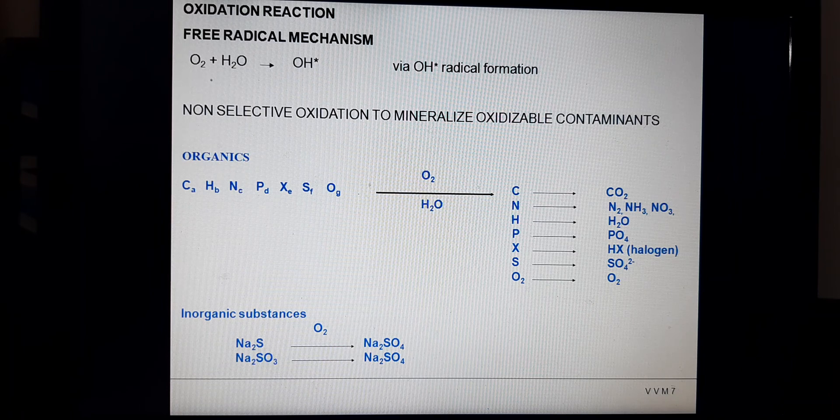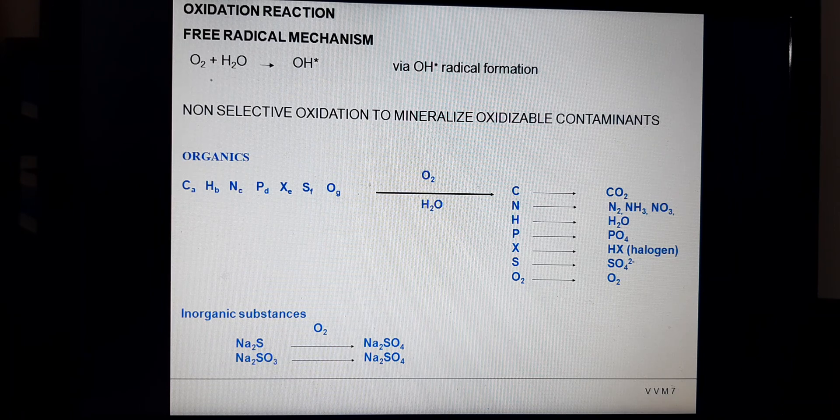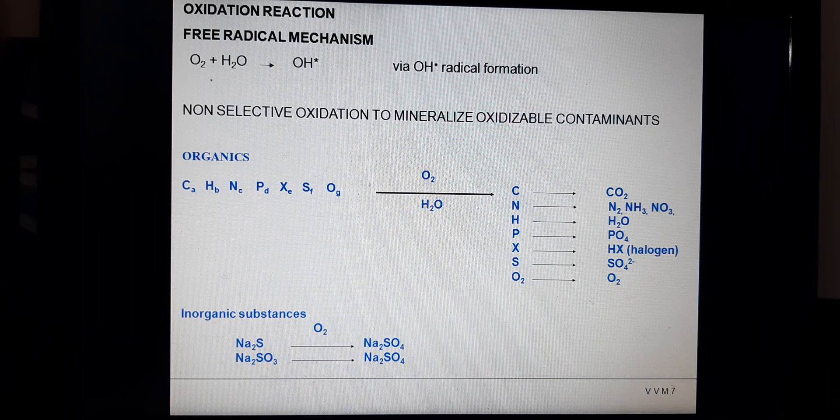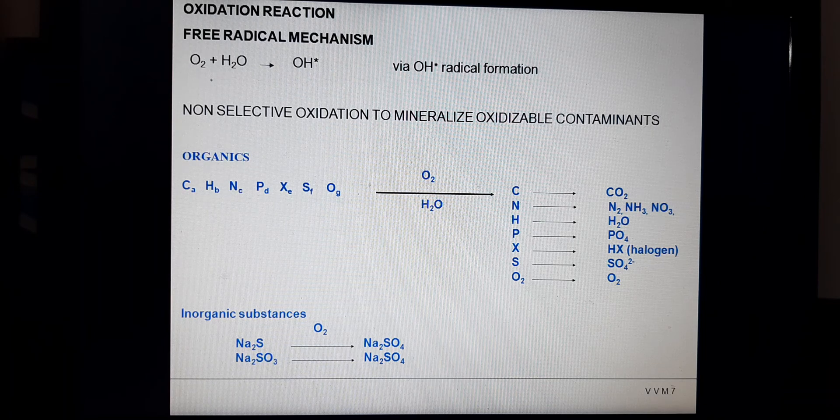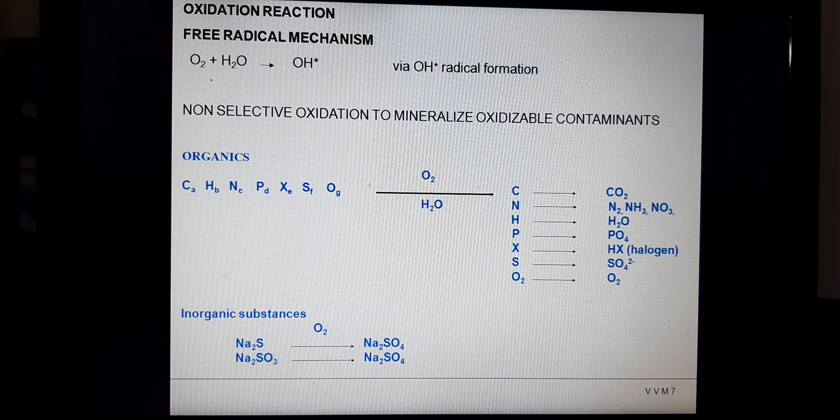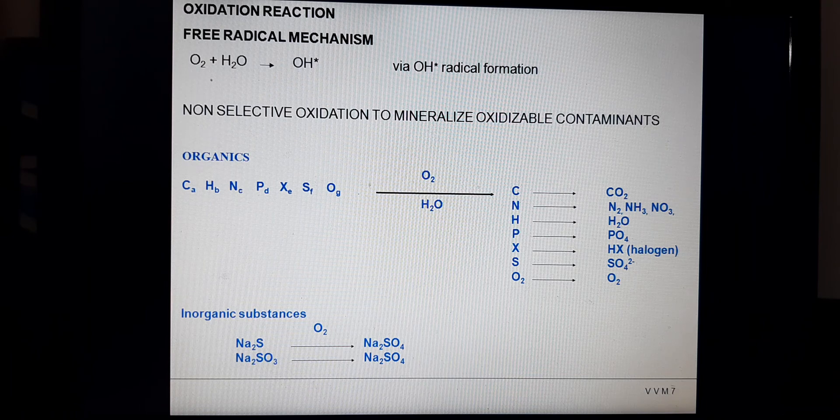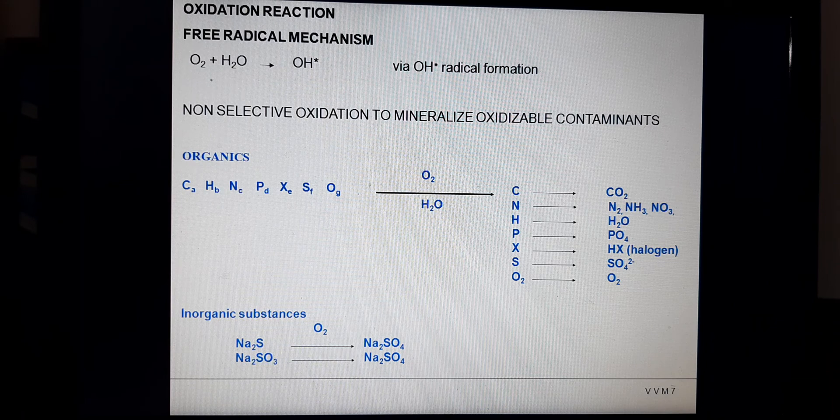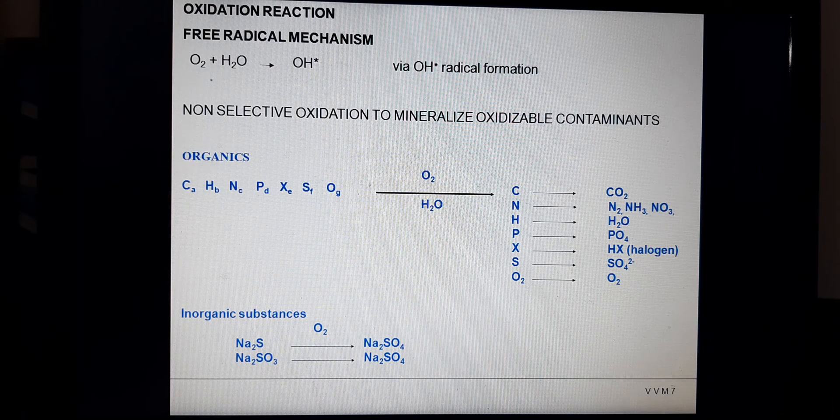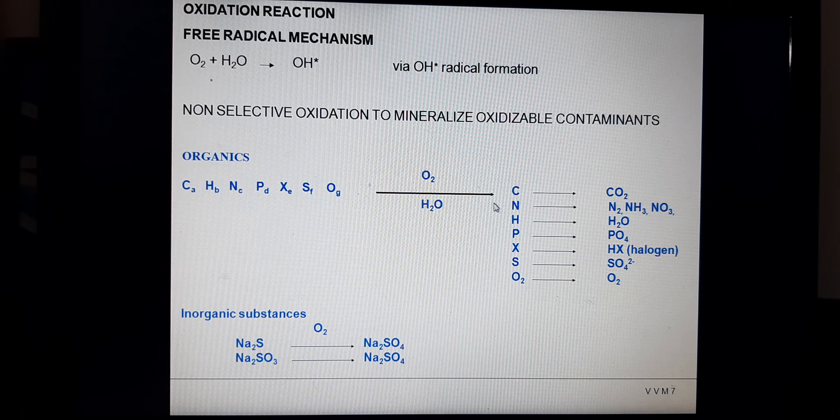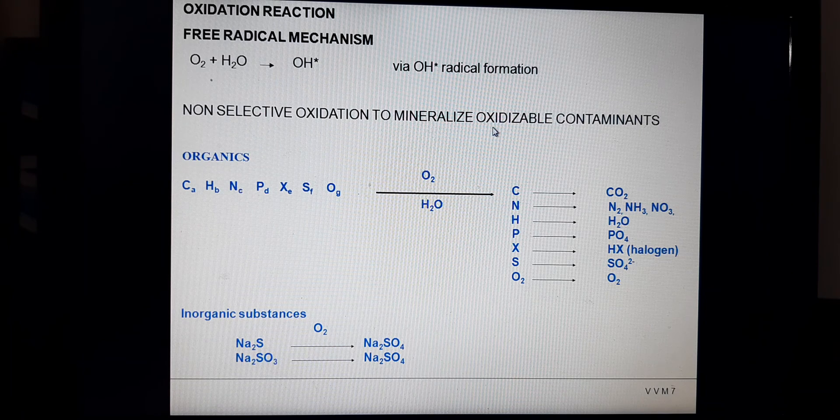How does oxidation take place in wet air oxidation? Through a free radical mechanism. O2 plus H2O - when oxygen is combined with water molecule, that forms the hydroxyl ion via OH radical formation. This non-selective oxidation mineralizes oxidizable contaminants.